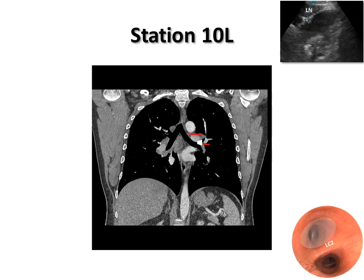The scope is then slowly pulled out while flexing until it pops into the left upper lobe bronchus. The eBus scope is gently advanced into the left upper lobe bronchus with the transducer turned toward the 11 o'clock position. This is station 10L. The upper border is the upper margin of the left main pulmonary artery, and the lower border is the interlobar region.